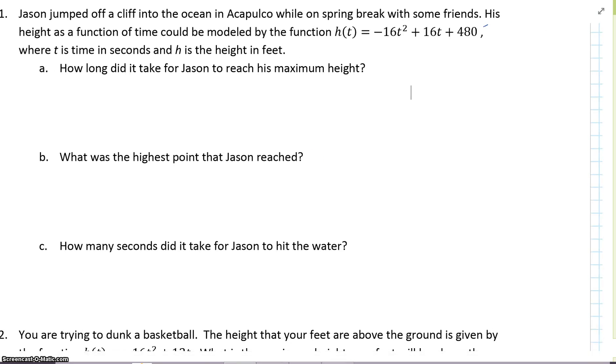Number 1. Jason jumped off a cliff in the ocean in Acapulco while on spring break with some of his friends. His height as a function of time can be modeled by the function that's listed, where t is time and h is height. How long did it take for Jason to reach his maximum height is question A, question B is what was the highest point he reached, and question C is how many seconds did it take him to hit the water.